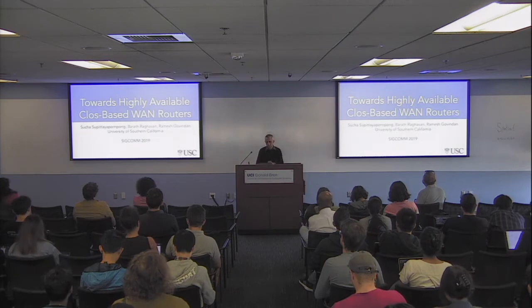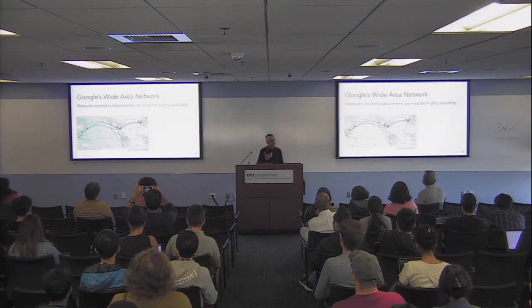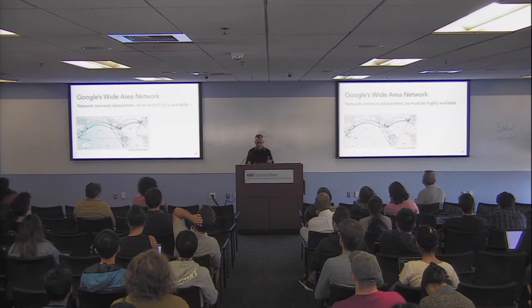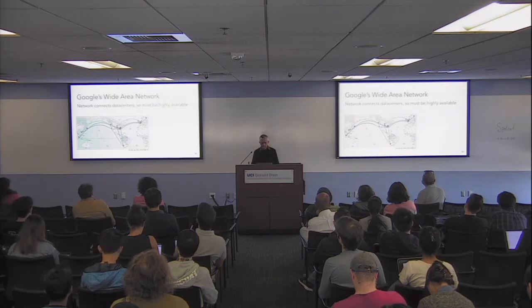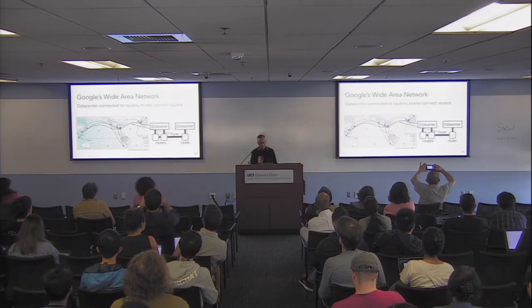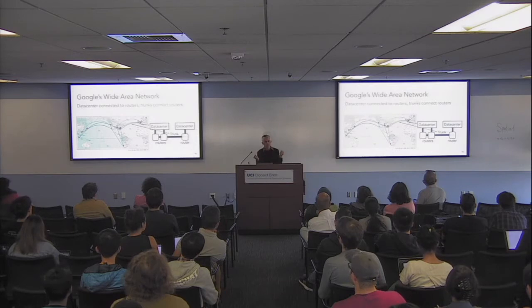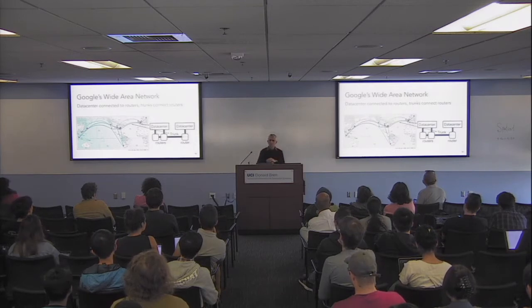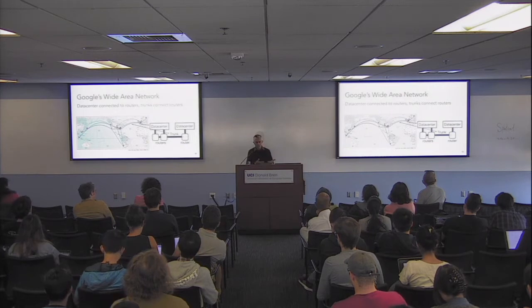Let me start with the first piece of work — designing highly available routers. This is all public knowledge. Google's B4 network has red dots showing where data centers are, and blue lines corresponding to what we call trunks. Trunks are aggregates of connections — groups of links between sites. Typically trunks are carried on optical fibers that go underneath the ocean or across the continent.